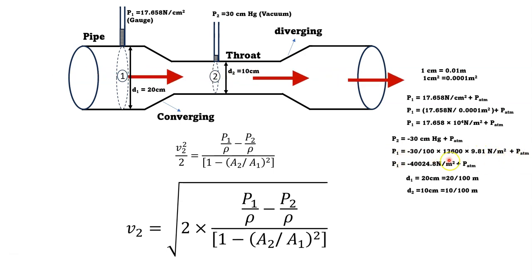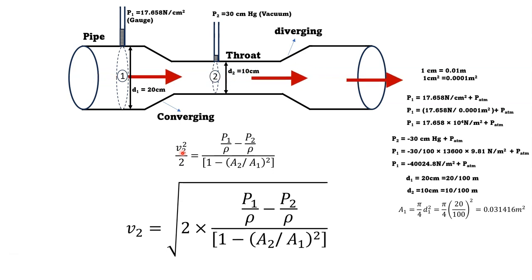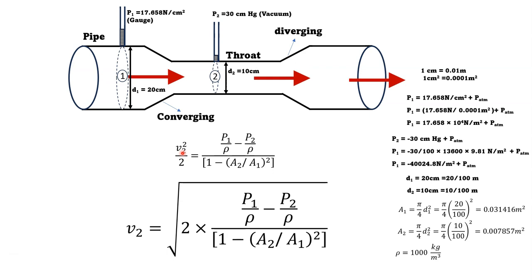Converting diameters: D1 = 20 cm = 20/100 = 0.20 m, and D2 = 10 cm = 10/100 = 0.10 m. Cross-sectional areas: A1 = π/4 · D1² and A2 = π/4 · D2². The density of water ρ = 1000 kg/m³. All values are now ready to substitute.